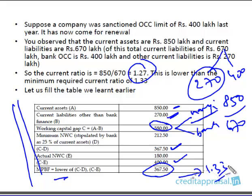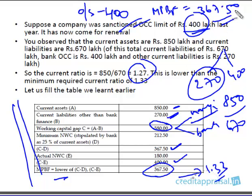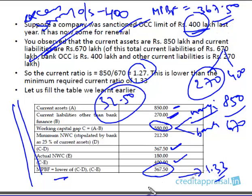If the minimum current ratio of 1.33 is to hold good, bank finance can go up to only 367.5 lakhs. But this is an existing company that has a sanctioned limit of 400 lakhs — it has already drawn and utilized 400 lakhs. So we have a situation where the actual outstanding is 400 lakhs, whereas the MPBF to ensure a current ratio of 1.33 is only 367.5 lakhs. There is therefore an excess borrowing of 32.5 lakhs. The current ratio is 1.27, which is below the bank norm of 1.33.